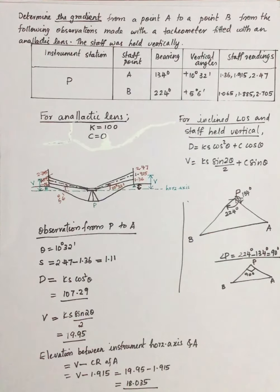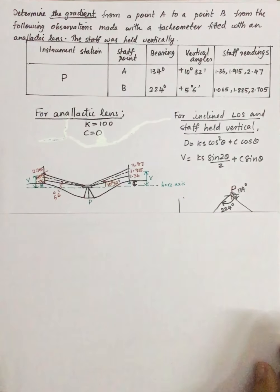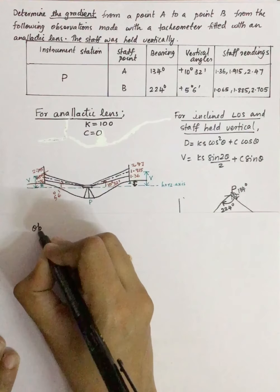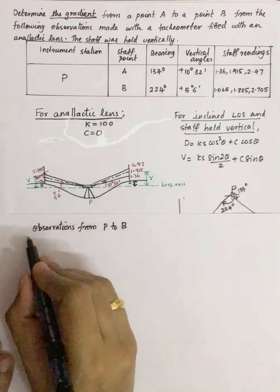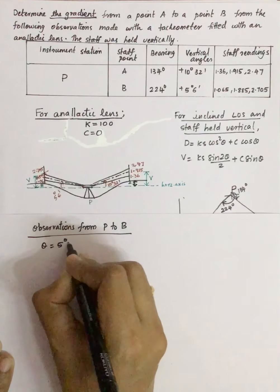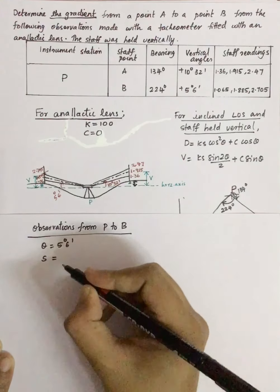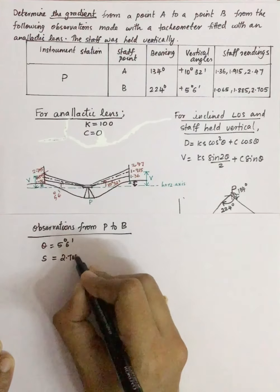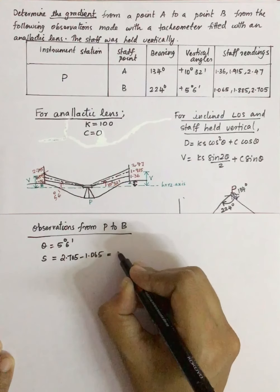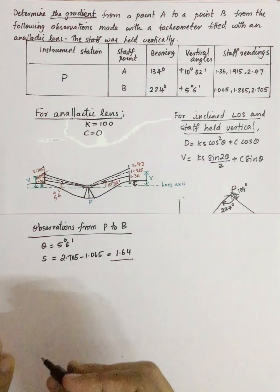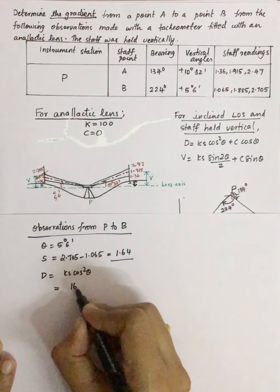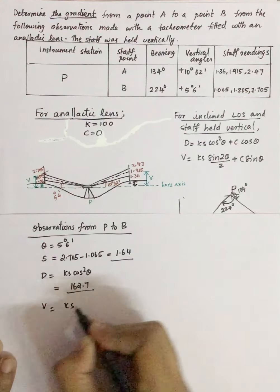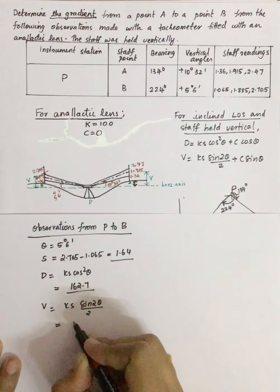Now you can find the readings corresponding to observations from P to B. The angle theta is 5 degrees 6 minutes. The staff intercept S is upper reading minus lower reading, that is 2.705 minus 1.065, giving 1.64. Substituting in the equation: D = Ks·cos²θ = 162.7, and V = Ks·sin2θ/2 = 14.520.